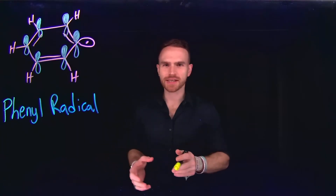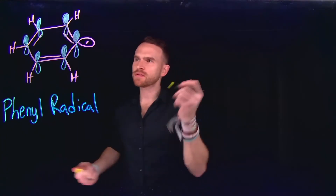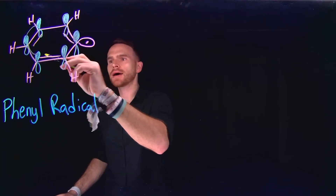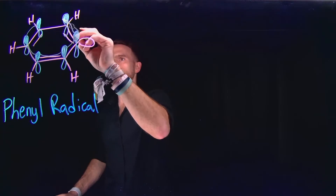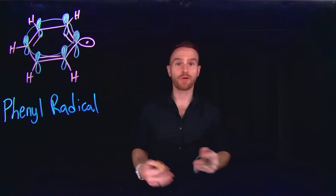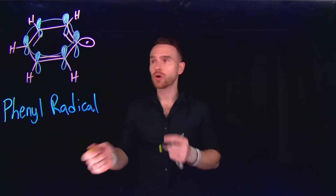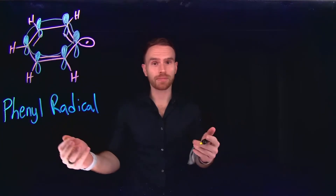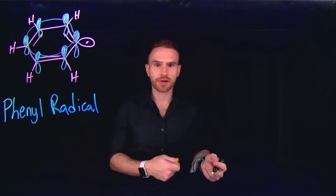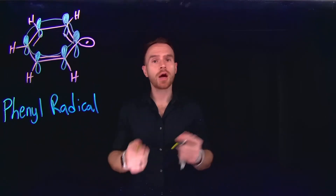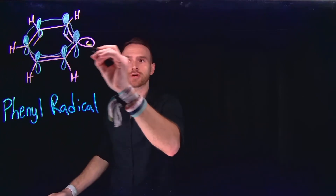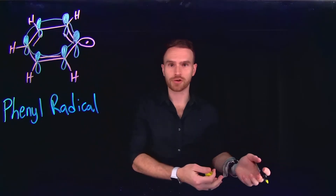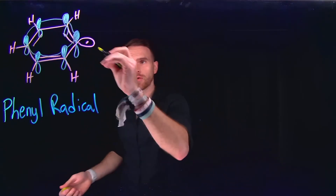Benzene is incredibly stable, and the reason for this has to do with the conjugation of the pi molecular orbitals lying along each adjacent carbon atom, where these unhybridized p orbitals are capable of interacting and delocalizing electrons such that they remain incredibly stable. So if we're to consider a transformation of benzene, we need to keep in mind that one of the hydrogen atoms at the carbon-hydrogen bond is going to need to form some sort of intermediate in order to perform a reaction.